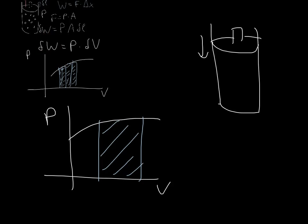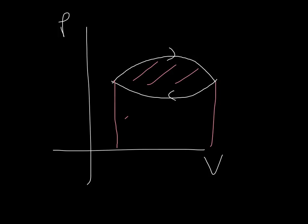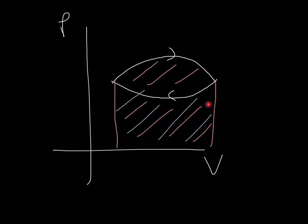Imagine I have a certain gas and first I increase its volume — the work that the gas did when expanding is the area in red. Then I decrease its volume — the work that I did against the gas is the area in blue. How much net work did I extract? I extracted the work that the gas did minus the work I had to do against the gas, giving this enclosed area. So when I do something like this, the work extracted from the gas is the area enclosed in the loop on the PV diagram.